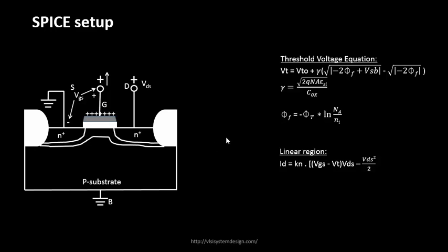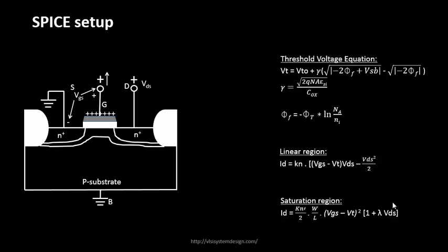When the MOSFET goes into the saturation region, we have the saturation region drain current equation. We identified it as a quadratic function, with a small VDS-dependent factor to increase accuracy. We will derive this factor in a separate semiconductor device physics video. For now, this is the saturation region drain current equation for this MOSFET.